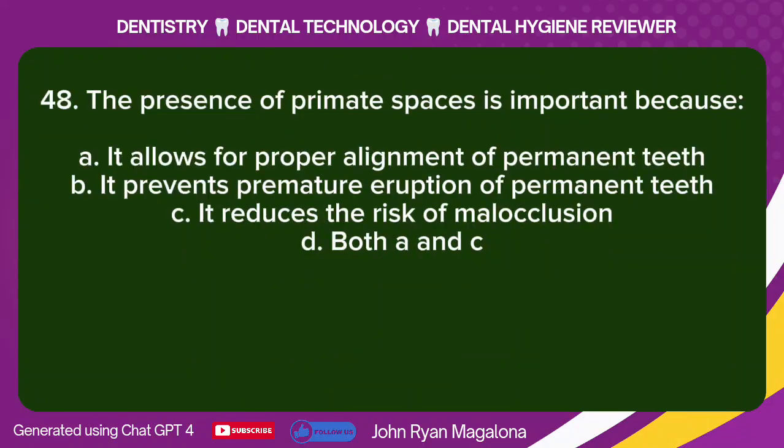Question 48: The presence of primate spaces is important because: A. It allows for proper alignment of permanent teeth. B. It prevents premature eruption of permanent teeth. C. It reduces the risk of malocclusion. D. Both A and C.